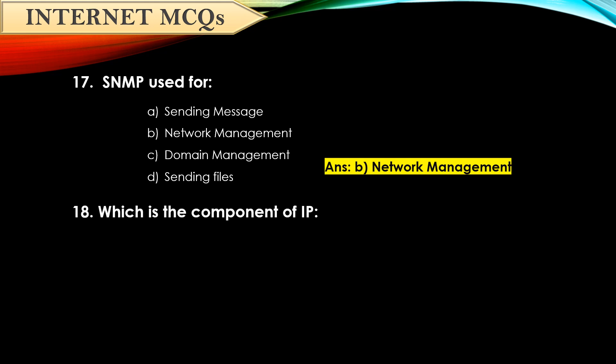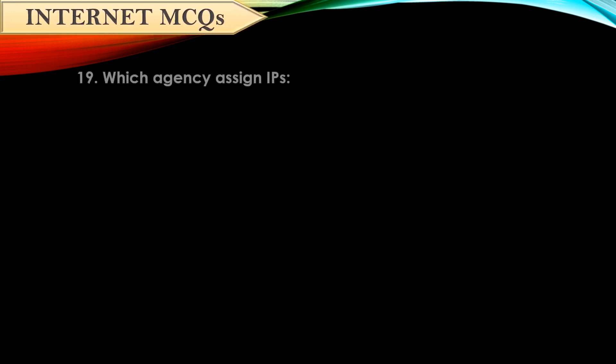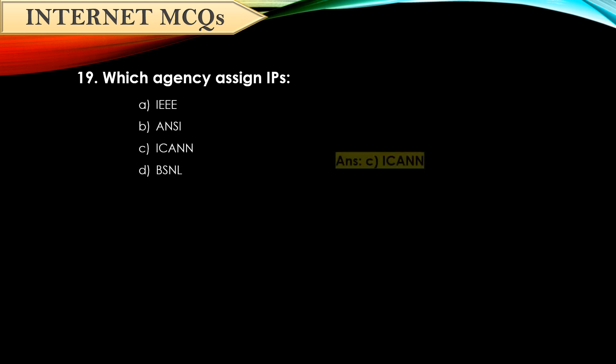Question number eighteen: Which is a component of IP? The answer is both network identifier and host identifier. Question number nineteen: Which agency assigns IPs? It's ICANN.